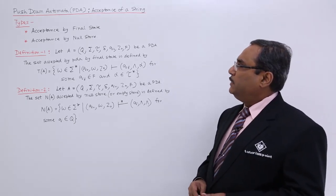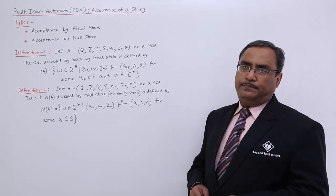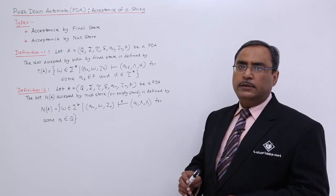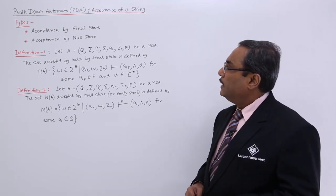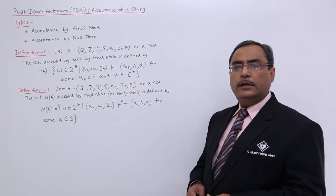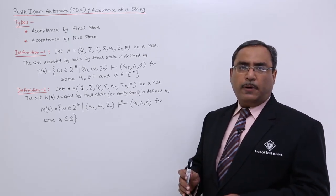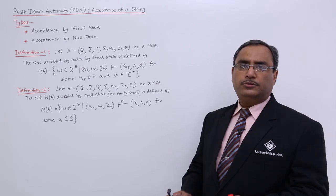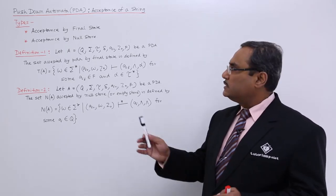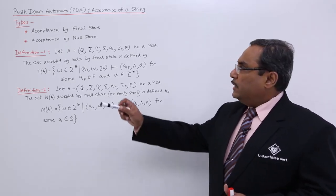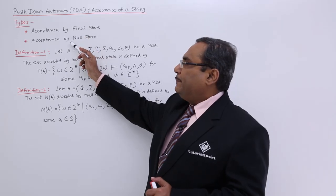One is acceptance by final state, acceptance by reaching to the final state. And acceptance by null store, that means acceptance by making the pushdown store empty. That is type number 1 and type number 2.